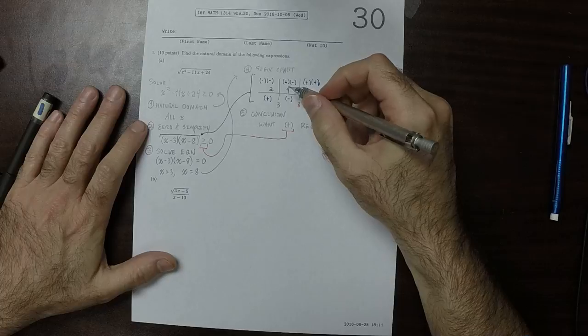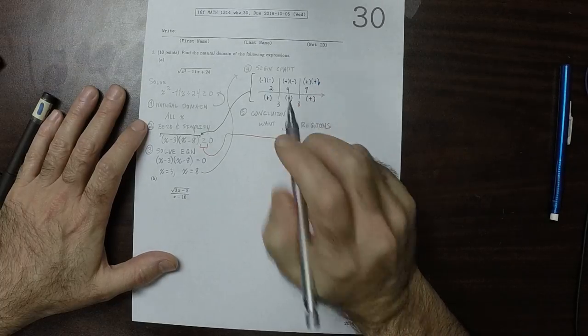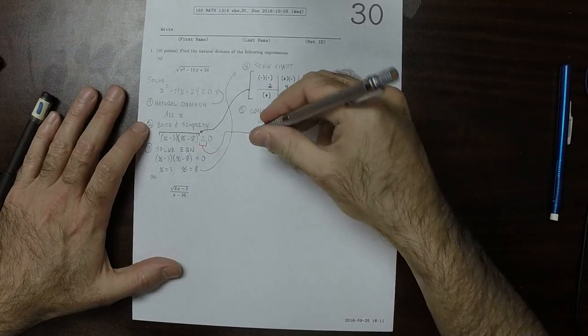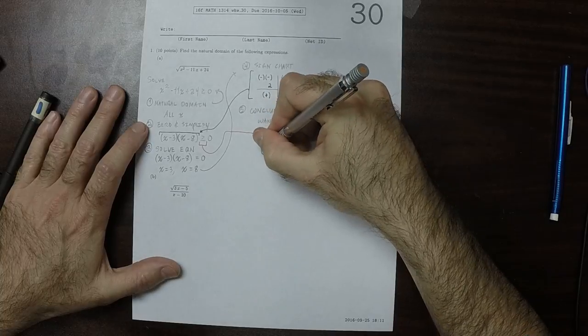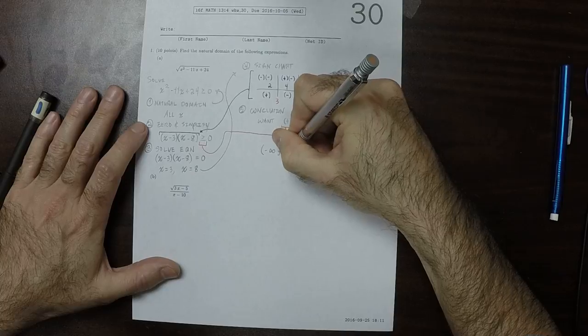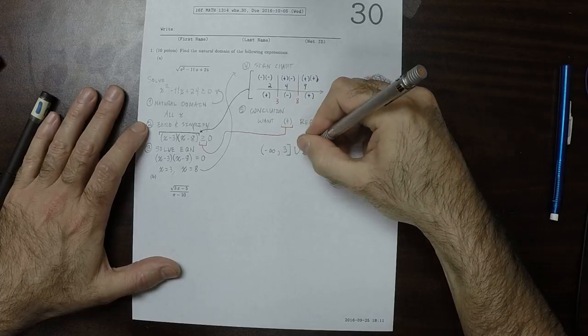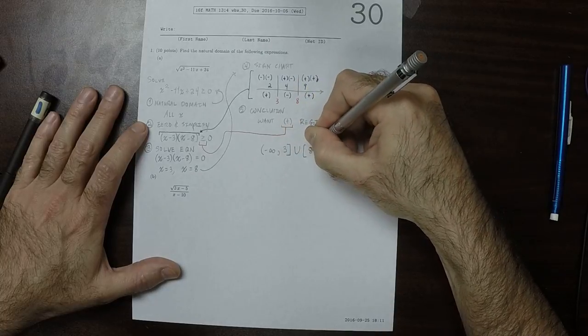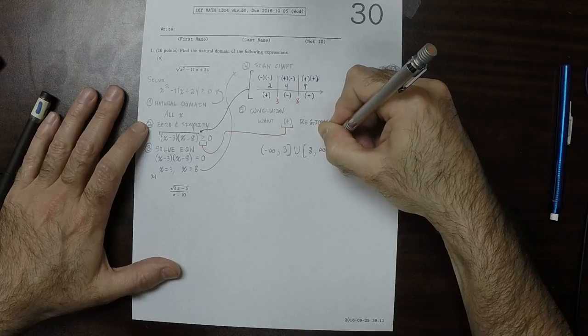So the answer to the question is the two positive regions in the sign chart. So the answer is negative infinity to 3 including 3, union 8 to positive infinity.